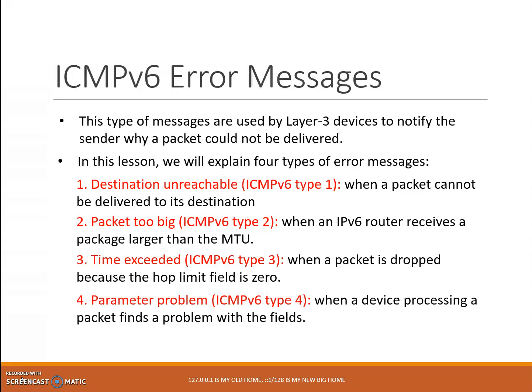The last type of error message is Parameter Problem, ICMPv6 Type 4. An ICMPv6 Parameter Problem error message is generated when a device processing a packet finds a problem with the fields in the main IPv6 header or an extension header and has to discard the packet. So any problem in the parameter, this type of message will be generated.